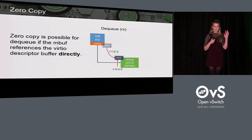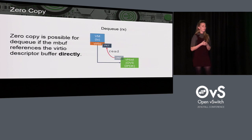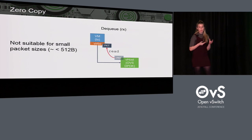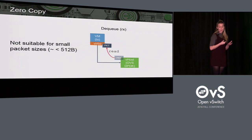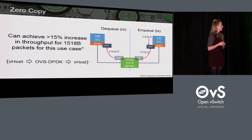There's no obvious way to remove the copy on the enqueue path without modifying QEMU or virtual code. But it is possible to remove the copy on the dequeue path — instead of copying the packet down and then reading it, you read the virtual descriptor buffer directly. That's implemented in DPDK 16.11. It's not suitable for all packet sizes; for small packets you won't always see a performance improvement, but with large packets you certainly will. In a simple VM-to-VM test, I saw a 15% increase in throughput.